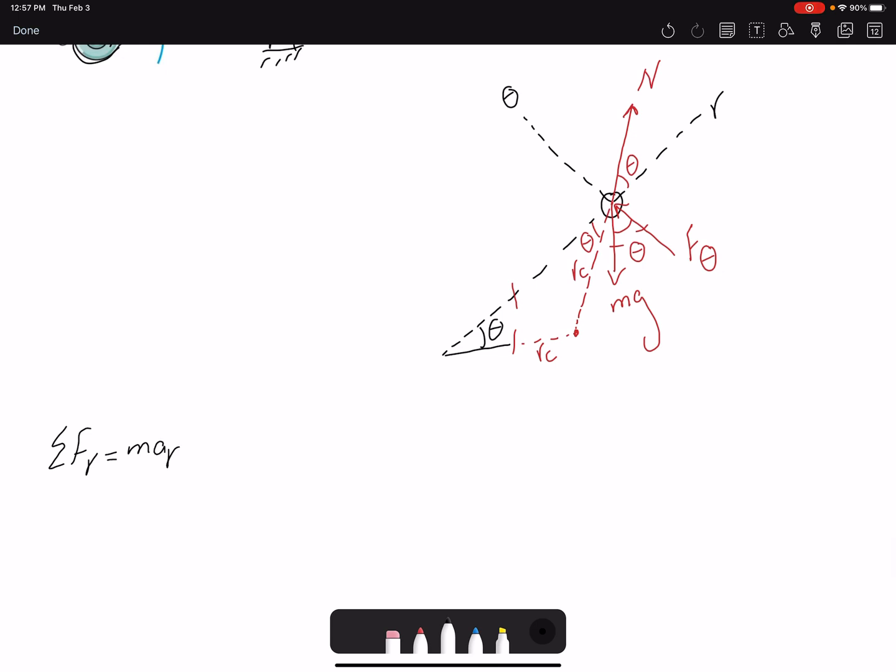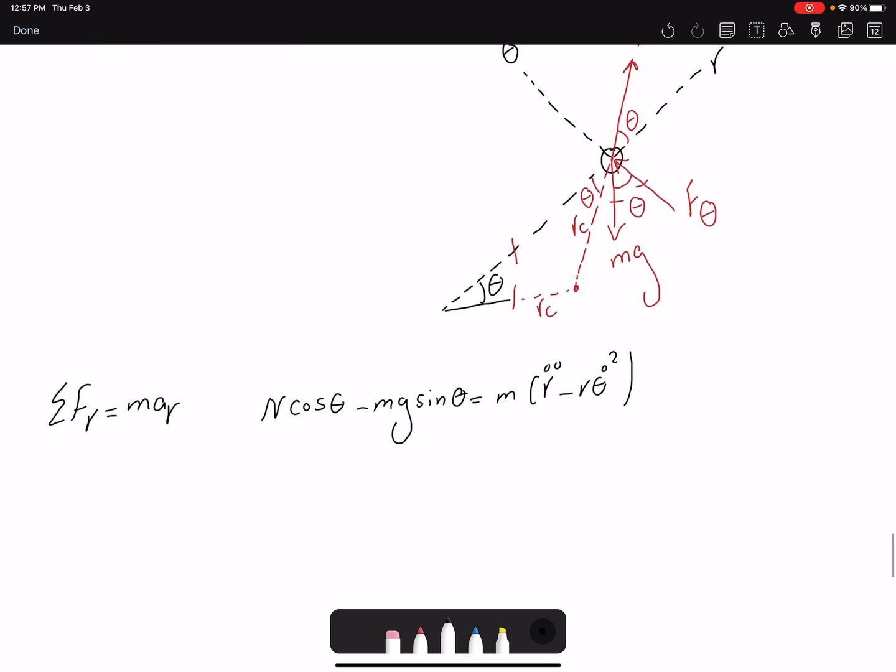So the forces that I have in R would be N cosine theta. You're going to say N would be 0 later on, but let's include that in our equation for now. And then we have R double dot minus R theta dot squared. And then summation of forces in theta, M A theta.